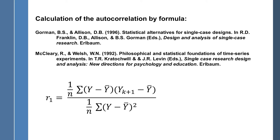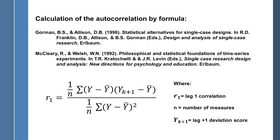I should also mention that I've seen other formulas beyond those provided by Gorman and Allison and McCleary and Welsh, and those ones also don't seem to work properly. I struggled with this issue for a few days before settling on making my own formula, but my own formula actually works. Here are the definitions: R sub 1 is the lag 1 correlation or autocorrelation; N is the number of measures in your single subject design; and Y sub k plus 1 is the lag plus 1 deviation score. I'll use a set of data to show you how to do this.